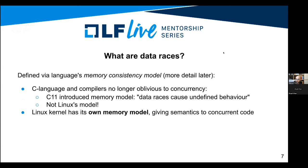Data races are defined at the programming language level, in the subspecification called the memory consistency model. Since C11, C and compilers are no longer oblivious to concurrency — they introduced the memory model along with atomics. In C11's world, data races cause undefined behavior because it's too difficult to enumerate all possible compiler and architecture combinations and how various optimizations might behave. But that's not the Linux kernel's model exactly, since it's not straightforward to match the kernel's needs with what C11 would have us do.